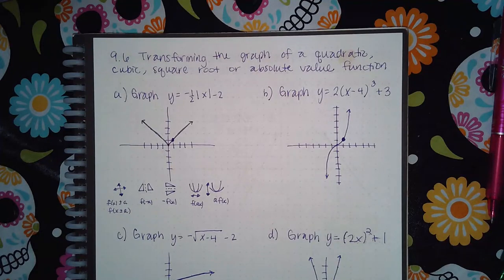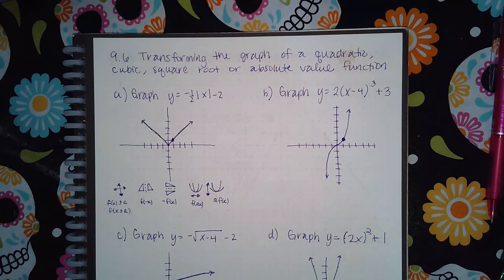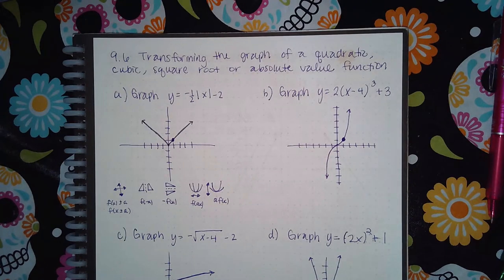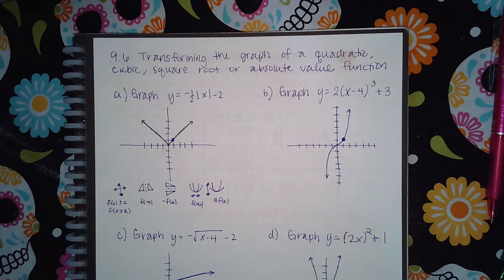This is section 9.6 on transforming the graph of quadratic, cubic, square root, or absolute value functions. The way you graph these problems is a lot different — they will have the original on the graph, but then they're going to give you buttons to be able to move it around. It's going to be really weird to navigate, so I'm going to talk through four different problems I've selected. The first is the absolute value, and I have that graph already given.